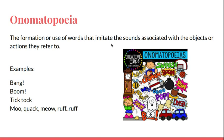Boom. Bang. Bing. Those are words. Onomatopoeia are words that imitate sounds. Sometimes it can be a word like crunch, imitating that crunch sound, or it could be a word like boom that's really obvious.